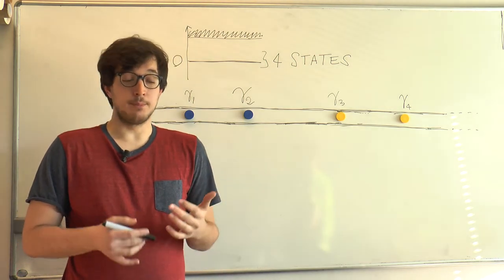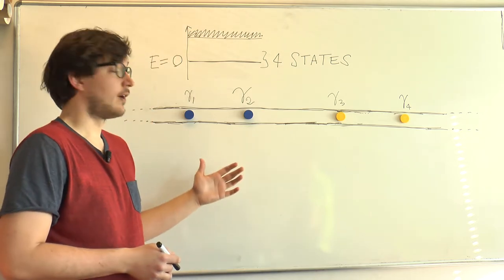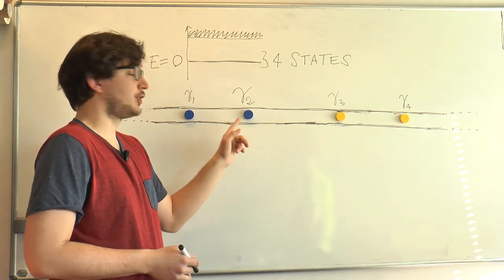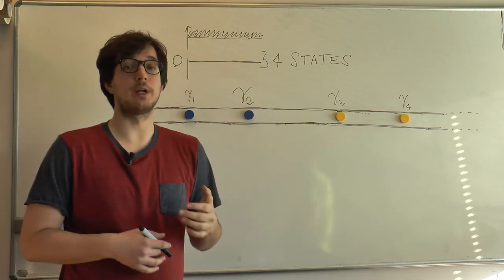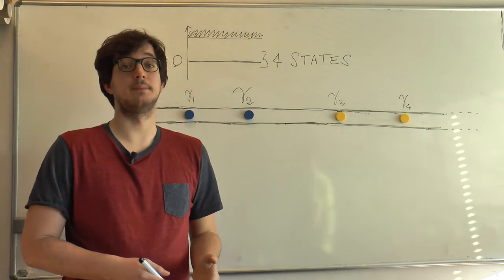So we will imagine that we can move the domain walls along the nanowire and, in this way, shift the position of the Majoranas, like this. And for the moment, do not worry about the details of how this can be done in practice.